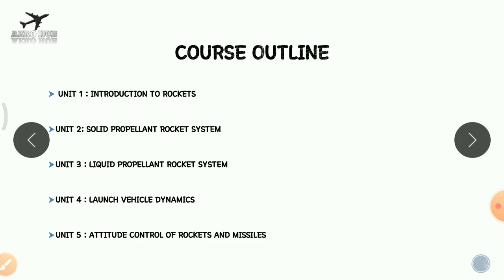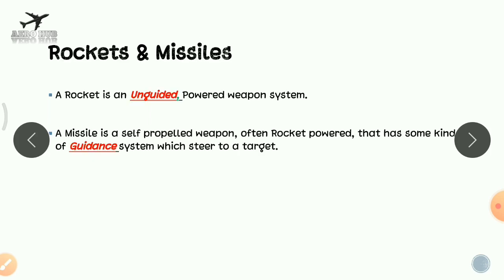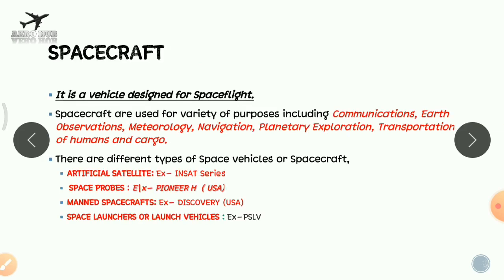Now we will discuss about what is a rocket and what is a missile. A rocket is a typically unguided powered weapon system — guidance meaning where we want it to go. The basic difference between a rocket and a missile is that a missile has a guidance system while a rocket does not. Both are used for military applications.